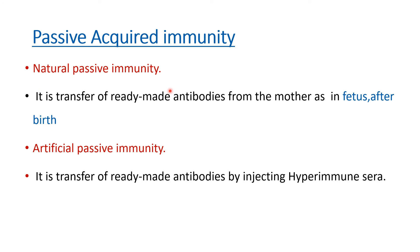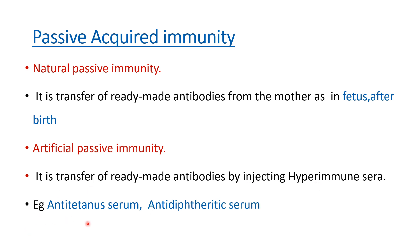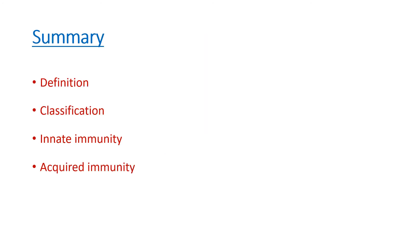In artificial passive immunity, for example, anti-tetanus serum containing antibodies against tetanus is directly injected into the body of the patient. That is how artificial passive immunity works — the antibody is being injected. In this video we've discussed the definition of immunity, classified it, covered innate immunity in detail including natural killer cells, and covered acquired immunity and its classification.